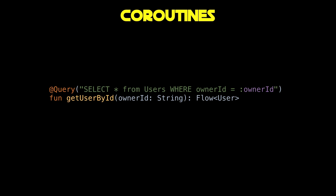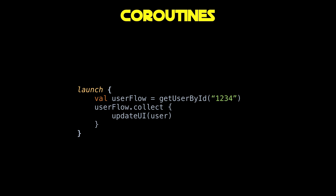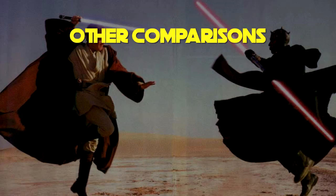On the coroutine side, channels and flows haven't been integrated into Room yet since some of it is still experimental, but it would look something like this: instead of returning an observable, it returns a Flow of users. We use the launch coroutine for starting the coroutine, then we get the flow for the specific user. This flow will emit users and then we are actually collecting these users as they come through and then updating the UI for each user.